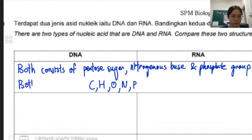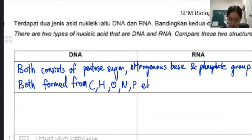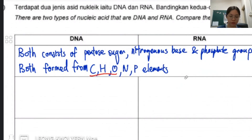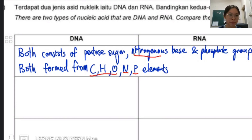The elements CHO are the main ones — carbon, hydrogen, oxygen — same as carbohydrate. For nucleic acid, it also has nitrogen because of the nitrogenous base, and phosphorus because of the phosphate group. That's why nucleic acid contains C, H, O, N, and P.